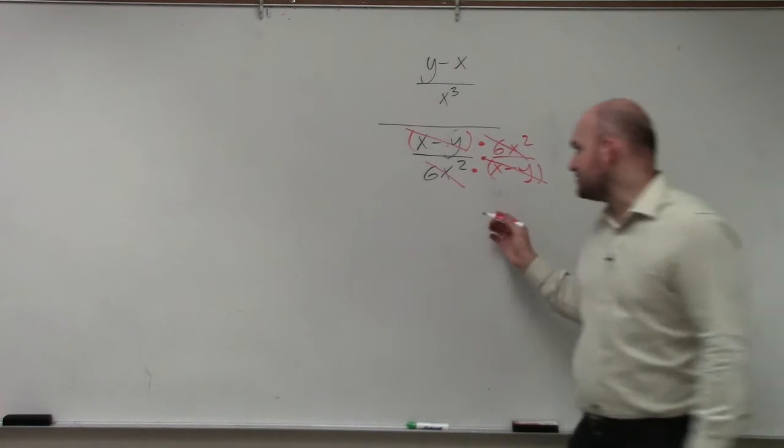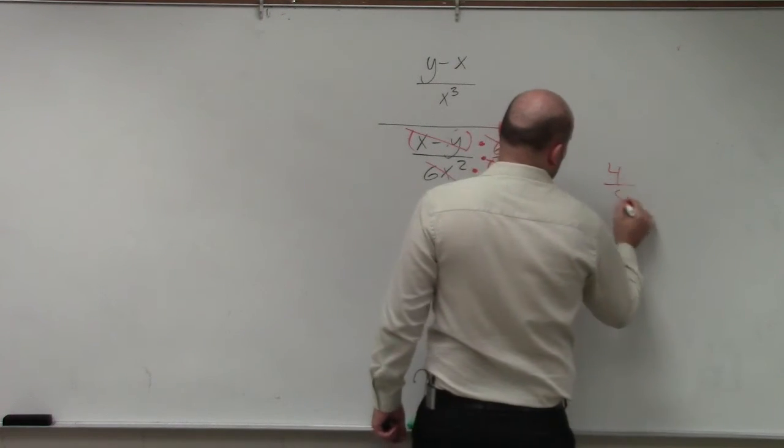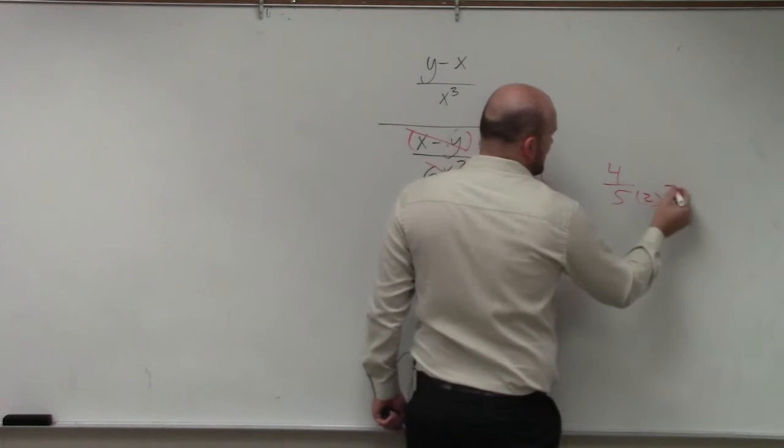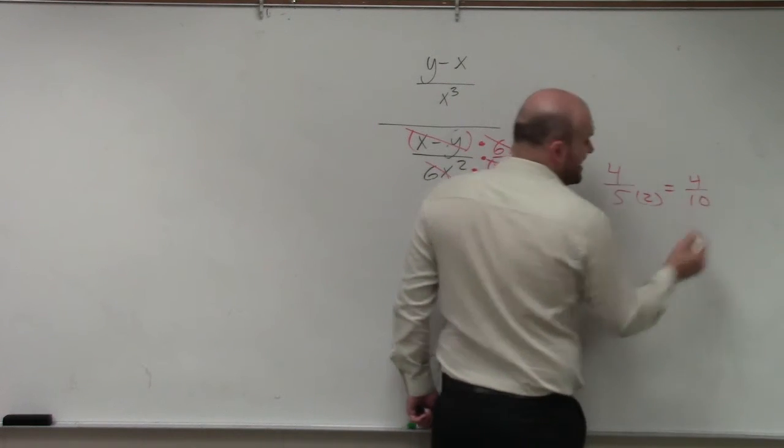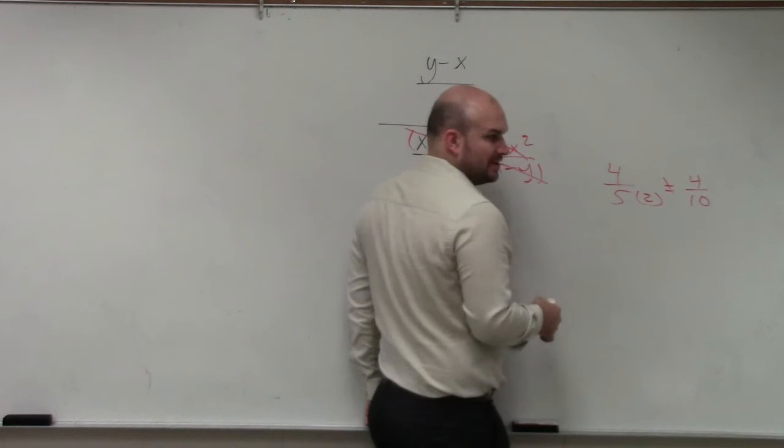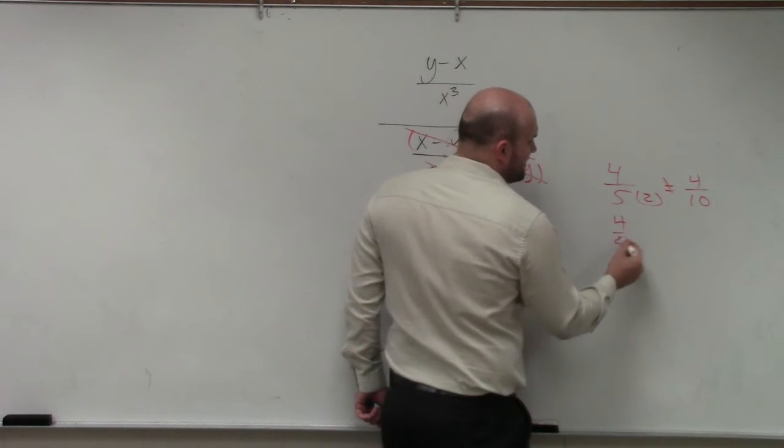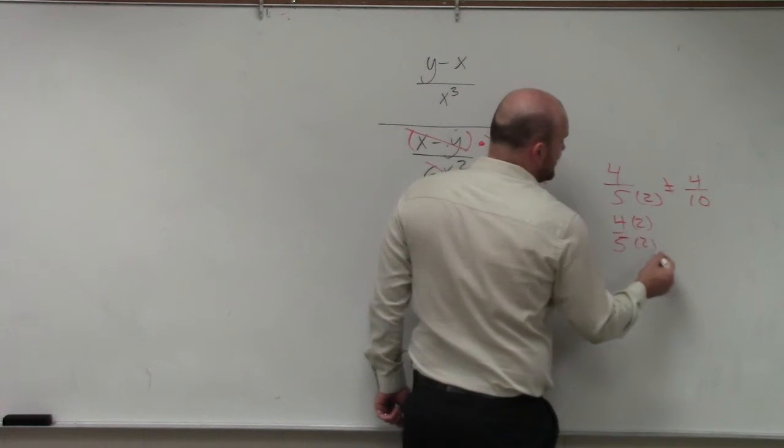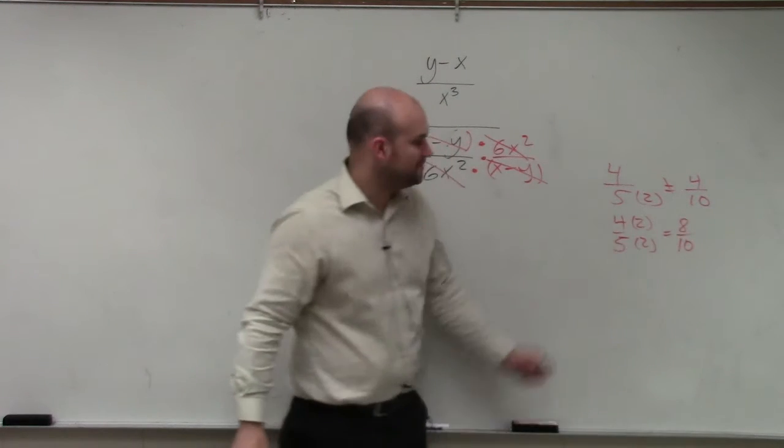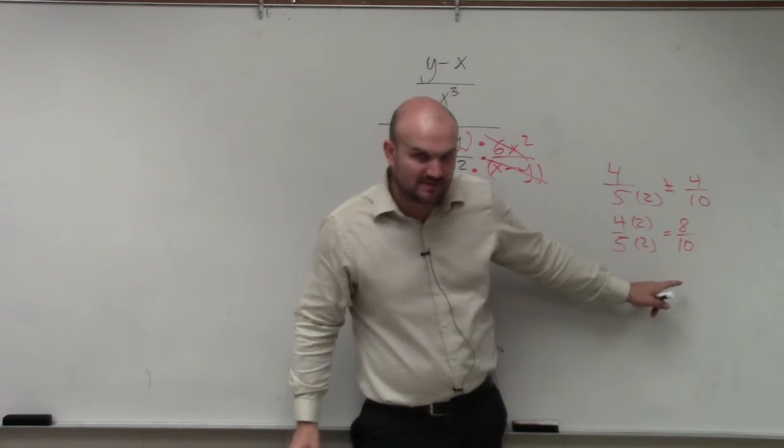But remember to keep equivalent fractions. If you had the fraction 4 over 5, and you just multiply the denominator by 2, you now have 4 over 10. Those are not equal to each other. But if you have 4 over 5, and you multiply by 2 over 2, you get 8 over 10. Do you agree with me that 4 over 5 is equivalent to 8 over 10?